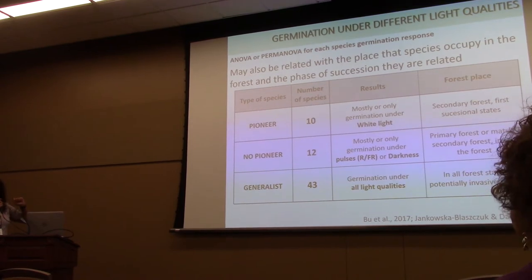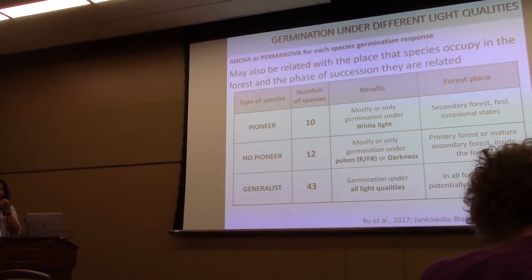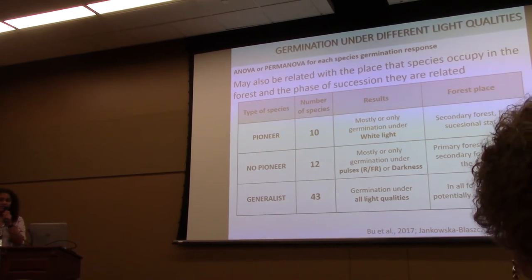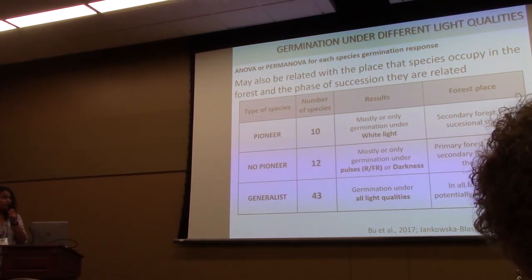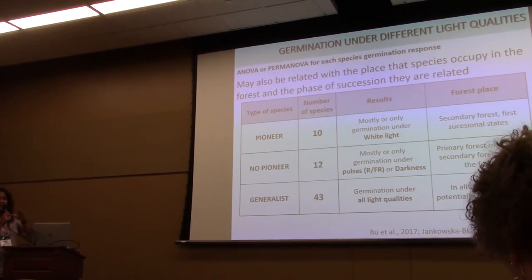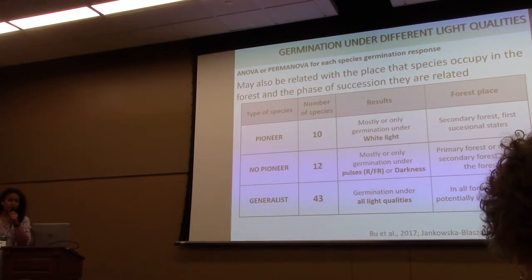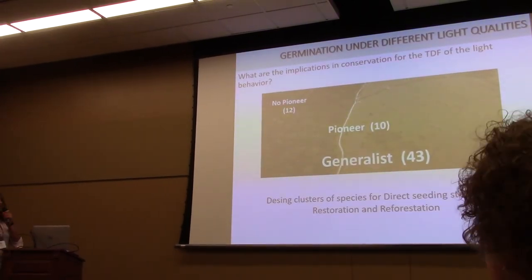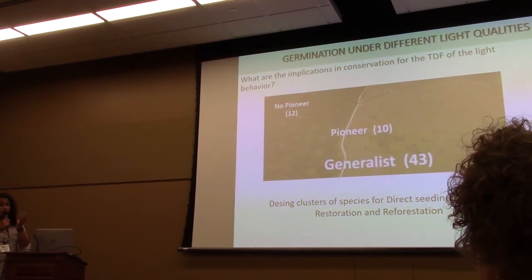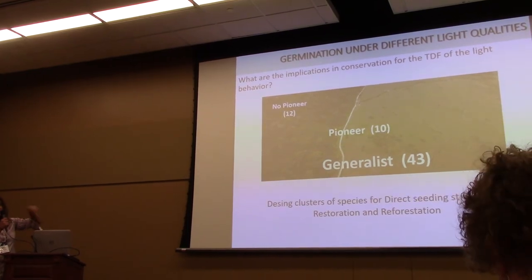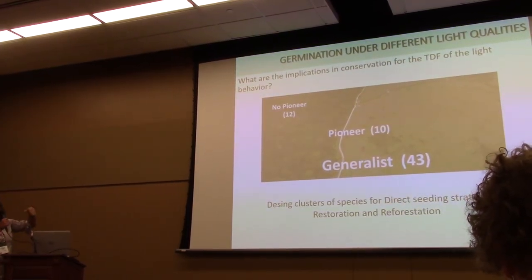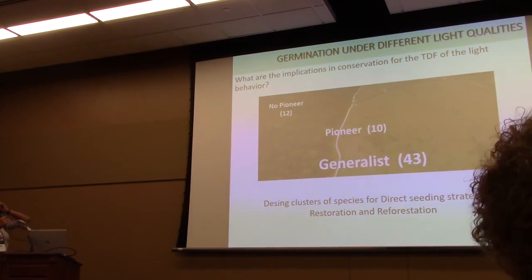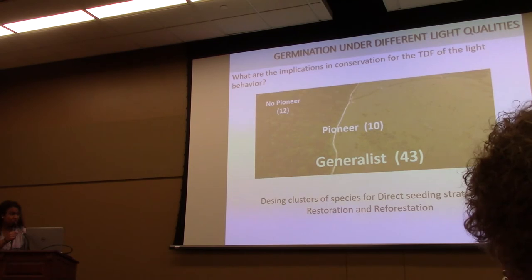We made a classification based on light quality and germination behavior. Ten species were pioneers, meaning they can only germinate if they receive direct light. Twelve species were non-pioneers, meaning they cannot germinate under direct light but can germinate under darkness and shade. Forty-three species can germinate under all light qualities, from total darkness to full light. This is very important for forest restoration: the 12 non-pioneer species can only be seeded inside the forest, the 10 pioneer species can be used for regenerating forest borders and gaps, and the 43 generalist species can grow everywhere.